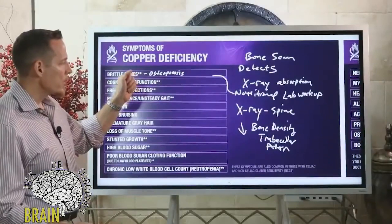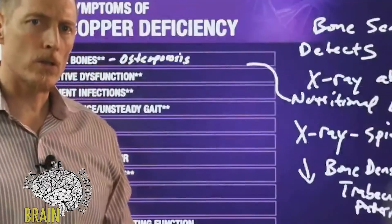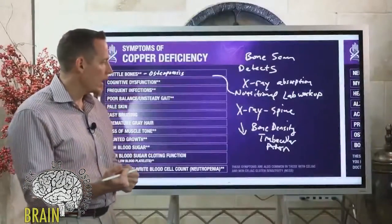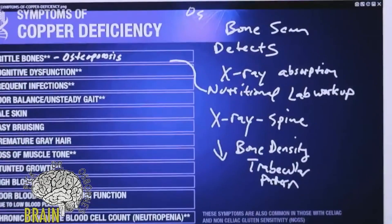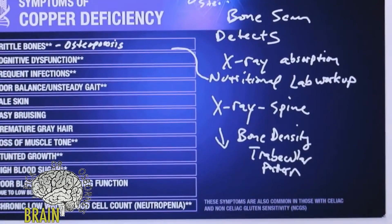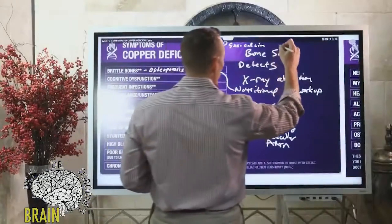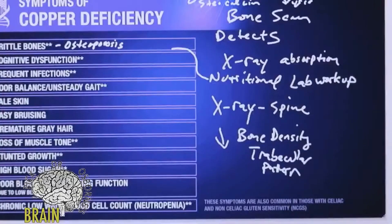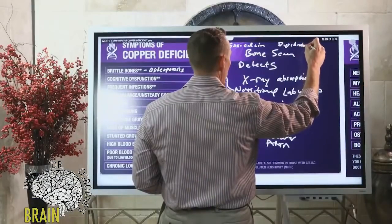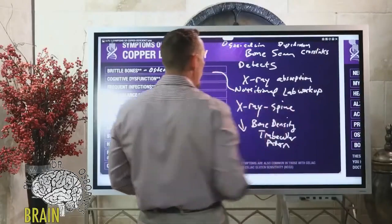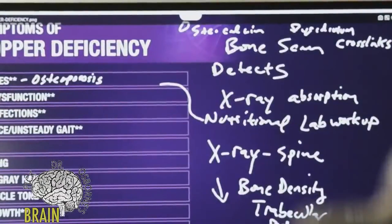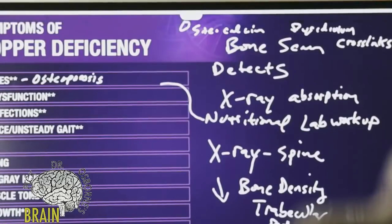There's also urine testing that can measure how fast your bone is building versus how fast it's breaking down. One of those tests is called osteocalcin. Another is called pyridinium cross-links — P-Y-R-I-D-I-N-I-U-M — and these urine tests can help determine your bone turnover rate.